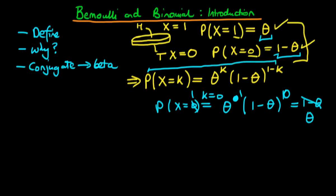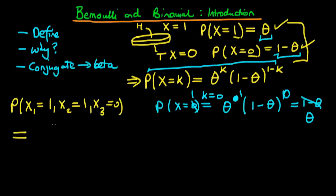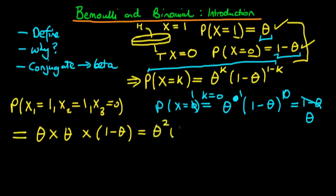Now what would happen if we flip the coin three times? Imagine we flip the coin three times and want to work out the probability that the first flip was one, the second flip was one, and the third was zero — two heads followed by a tail. We assume they are a random sample and hence independent, which is a fairly safe bet for flipping a coin. In that case, we multiply the individual probabilities together. For the two heads we get theta times theta, and for the tail we get one minus theta. Hence the probability of this particular sequence is theta squared times one minus theta.